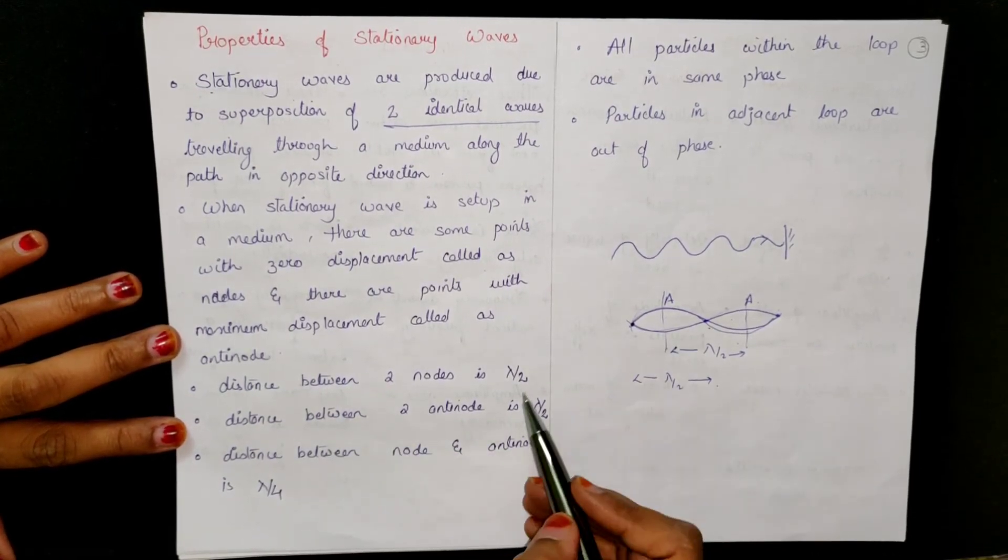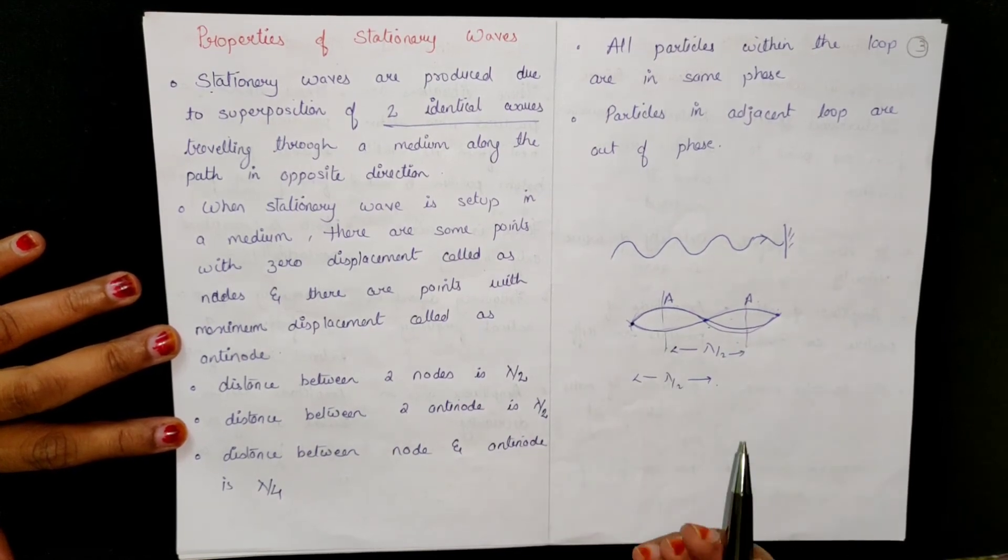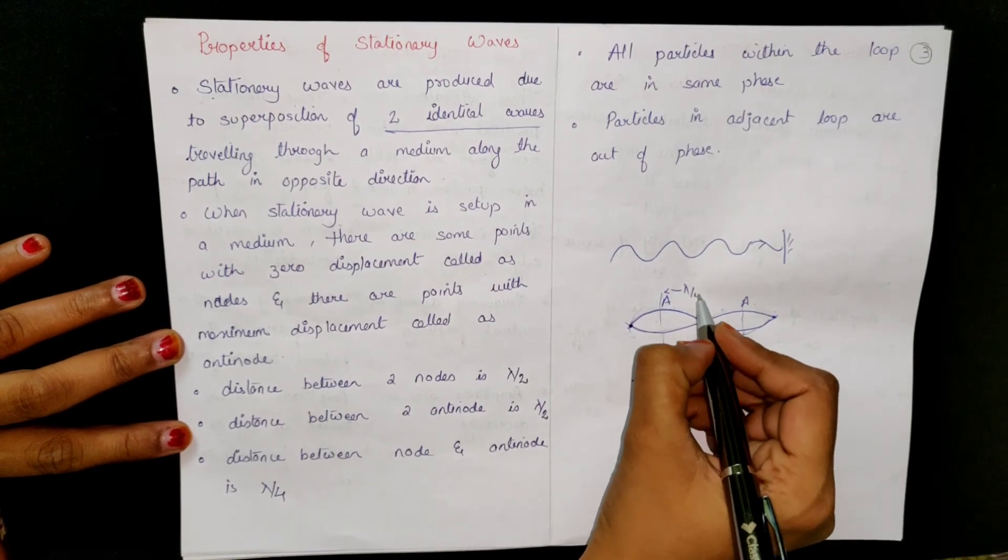The distance between nodes is lambda by 2, the distance between nodes is lambda by 2, and the distance between node and anti-node is lambda by 4.